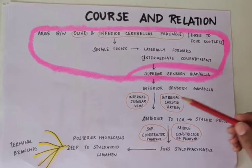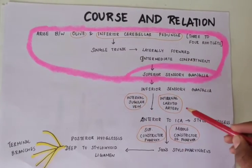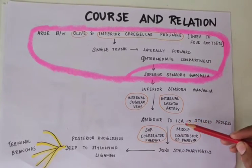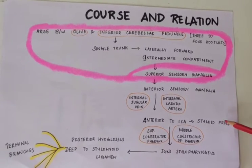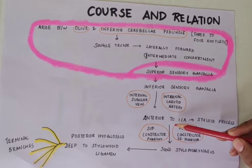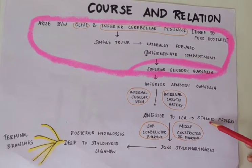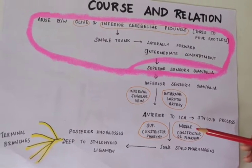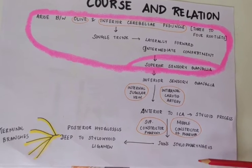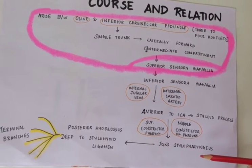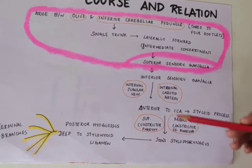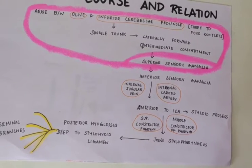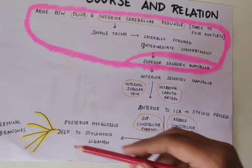After exiting the jugular foramen, the nerve travels between the internal jugular vein and the internal carotid artery, running parallel to them before passing anteriorly to the internal carotid artery. It then reaches the styloid process, after which it passes between the superior and middle constrictors of the pharynx. It then travels along with the stylopharyngeus muscle and goes deep to the stylohyoid ligament, after which it gives out its terminal branches.